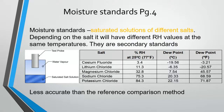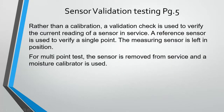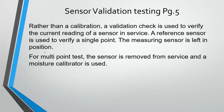Last is sensor validation testing. Rather than a full calibration, a validation check verifies the current reading of the sensor while it remains in service — a reference sensor checks a single point. This is essentially the same as doing a bump test on a gas detector head: you know the detector should trip at 20 ppm, so you present it with a known concentration and if the reading matches, you call it good. For a multi-point test, you must remove the sensor and use the moisture calibrator.